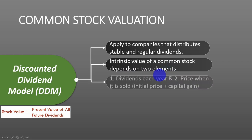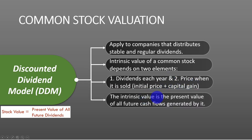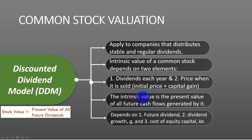The intrinsic value of the common stock using the discounted dividend model depends on two elements. One, the dividends that are paid per share. Secondly, the price at which you are going to sell the stock when you part with it — and that price will include the initial price you buy the share plus or minus the capital gain or capital loss. The intrinsic value is the present value of all future cash flows, including the present value of the dividends and the present value of the selling price. It depends on three factors: the future dividends, the dividend growth, and the cost of equity — which is the same as the required rate of return expected by the investor.